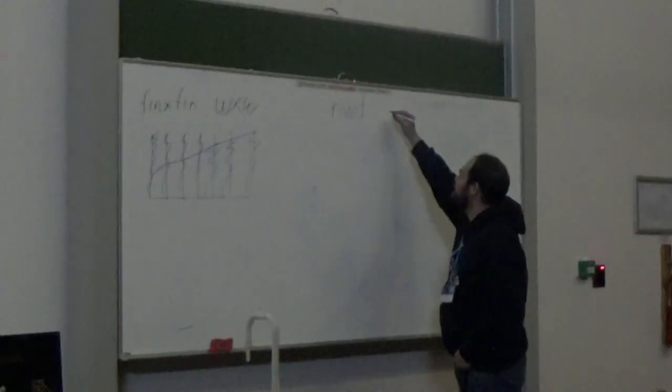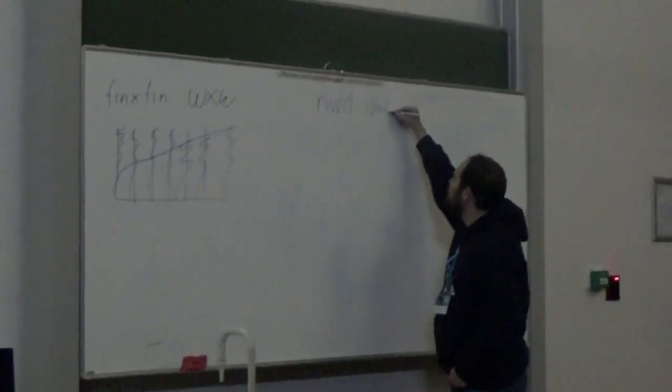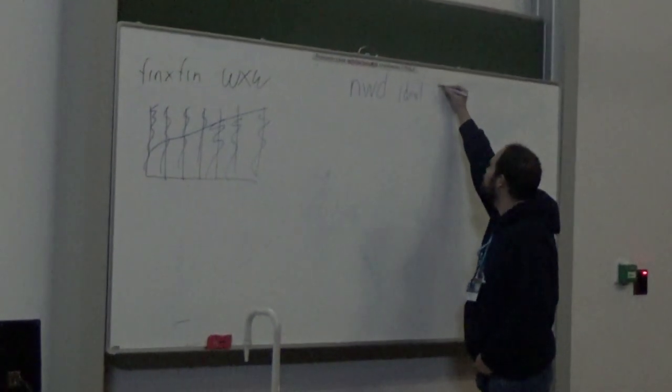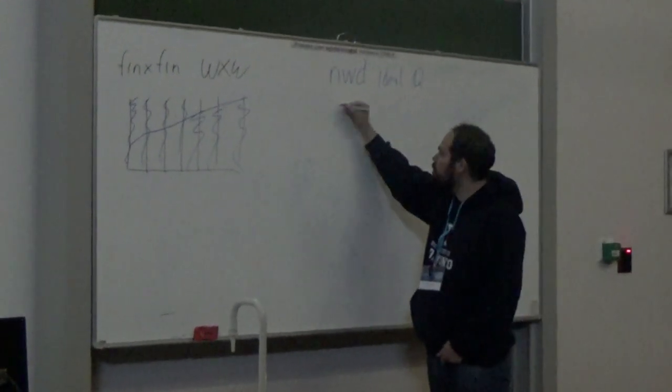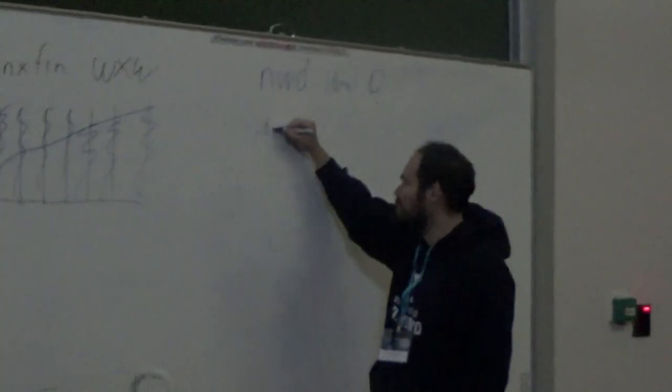Being a Q-point is the same as not being Katětov above an ideal called fin^{1/n}. Being rapid can be characterized as not being above an analytic ideal. And being a nowhere dense ultrafilter is the same as not being above the nowhere dense ideal, which is an ideal on the rational numbers consisting of nowhere dense sets.